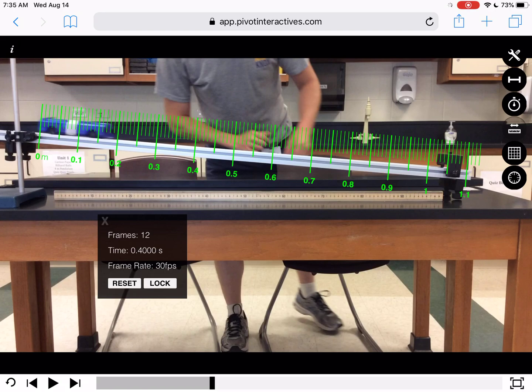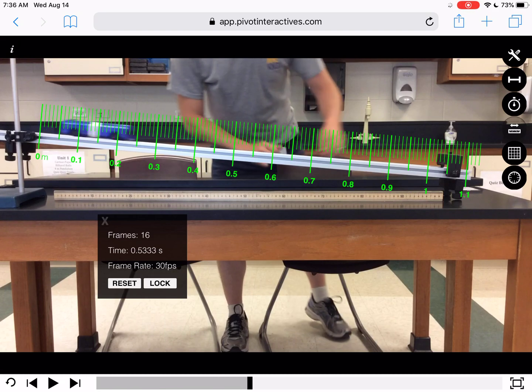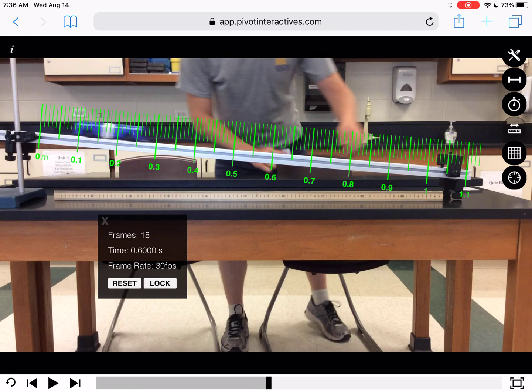And again I'm going to look there and it's, well it's not quite 0.1 but 0.09 is past that, so I'm going to write that down as 0.095 and the time is 0.4 seconds. And I'm going to go to 0.6 seconds here. And that looks like it's about 0.19 meters for 0.6 seconds.